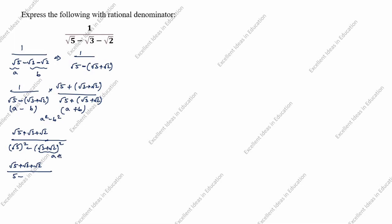Now we apply the (a + b)² formula: a² + b² + 2ab. Here a is root 3 and b is root 2, so: root 3 whole squared plus root 2 whole squared plus 2 times root 3 times root 2.